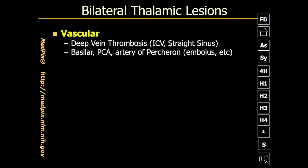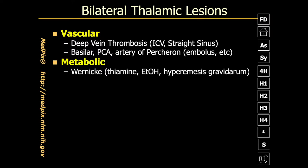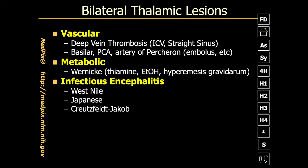What's the differential diagnosis for this? We could have a vascular etiology — deep vein thrombosis involving the internal cerebral veins or the straight sinus, or an arterial supply problem involving the basilar artery, posterior cerebral artery, or the artery of Percheron — or an embolus. We could have a metabolic disorder like Wernicke's encephalopathy from thiamine deficiency associated with alcoholism or hyperemesis gravidarum. We can also have infectious encephalitis localizing to the thalamus, such as West Nile, Japanese encephalitis, and Creutzfeldt-Jakob disease, as well as bilateral thalamic diffuse gliomas.